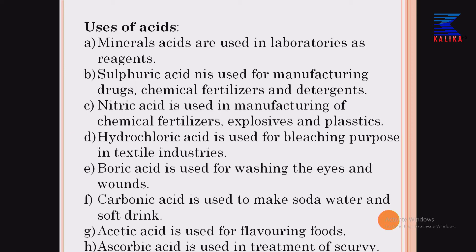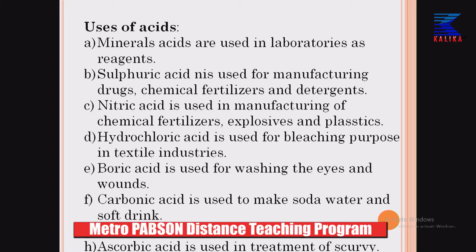Boric acid is used for washing eyes. Carbonic acid is used for making soft, non-alcoholic beverages — that means soft drinks. When carbon dioxide gas reacts with water, it forms carbonic acid with the molecular formula H₂CO₃. Remember that formula: H₂CO₃ is the carbonic acid used to make soda water and soft drinks. Similarly, acetic acid is used for flavoring foods — we use acetic acid in different foods as a taste enhancer.